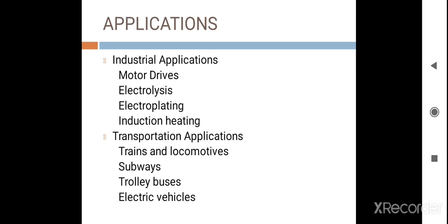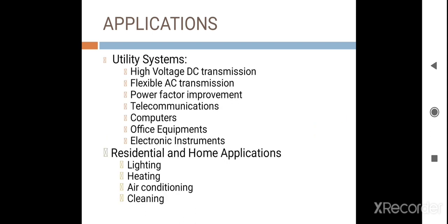If we talk about power electronics applications, in industrial applications, power electronic devices are used in motor drives, electrolysis processes, electroplating processes, and induction heating. For transportation applications, they are used in trains and locomotives, subways, trolley buses, and electric vehicles. In utility systems, they are used in high-voltage DC transmission, flexible AC transmission, power factor improvement, telecommunications, computers, office equipment, and electronic instruments.